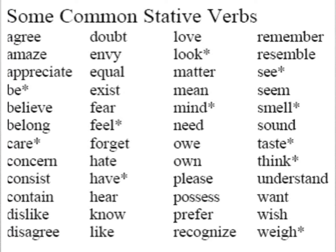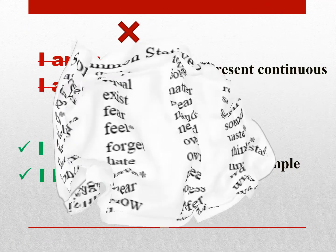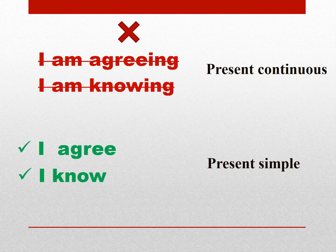بنابراین فعلهایی که با مفهوم اصلیشون Stative حساب میشن به هیچ عنوان ing نمیگیرن و توی هیچ مدل Continuous نمیتونید استفاده کنید. Present Continuous شامل Stative Verbs نمیشه. ما چیزی به نام I am agreeing یا I am knowing نداریم. به جاش Present Simple استفاده میشه: I agree یعنی موافقم، I know یعنی میدونم.